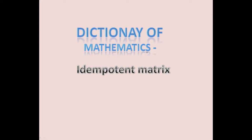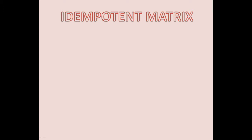Dictionary of Mathematics. Idempotent Matrix. We are going to give the definition of idempotent matrix. A matrix A is said to be idempotent if A squared is equal to A. That is, the square of the matrix would have the elements same as the matrix A itself.